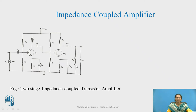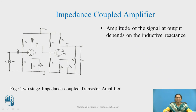Resistor RL is connected between the collector and ground. You can observe that in the preceding stages, we are using an inductor at the collector stage. But at the final stage, resistor RC is used in place of the inductor. The amplitude of the signal or the output voltage depends on the inductive reactance at the collector, and this is applicable for all stages.